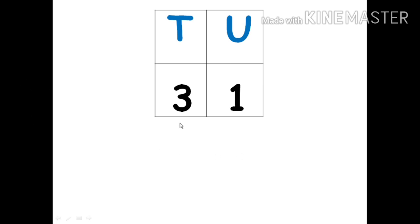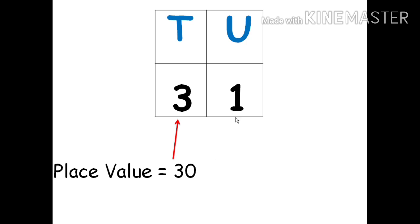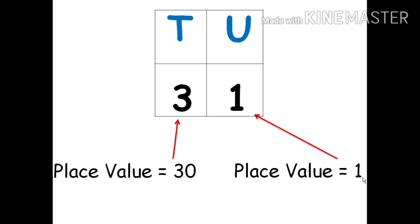3 is at the tens place. What is the place value of 3? Yes, 30. And what is at the units place? What is the place value of 1? It is 1. Now let us add the place values: 30 plus 1 is 31.